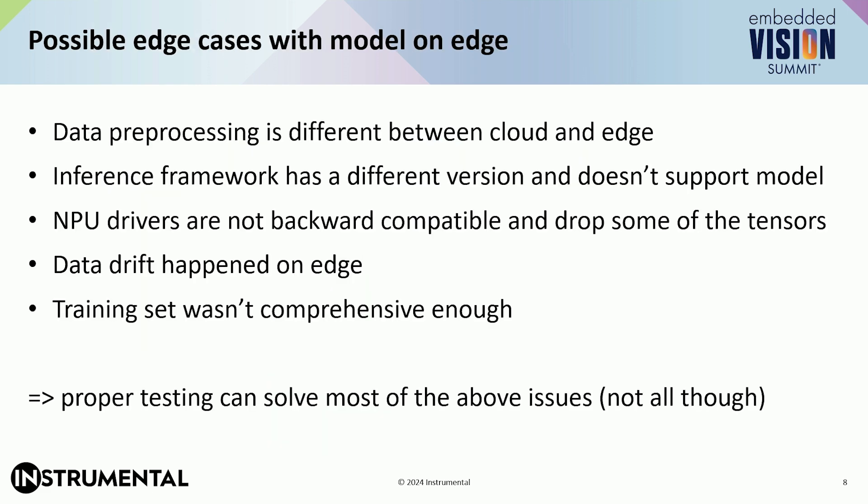So why did it happen? Could be that data pre-processing between cloud and Edge is different. Maybe the inference framework has a different version, and it doesn't support the model fully. Or NPU drivers are not backward compatible and drop some of the tensors — something which never happens in production, obviously.